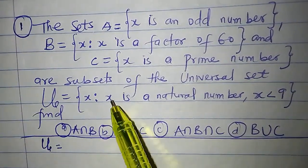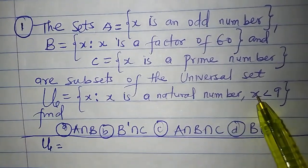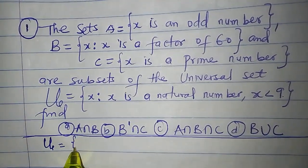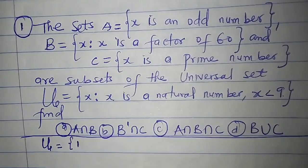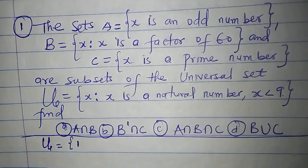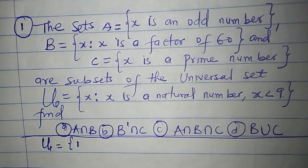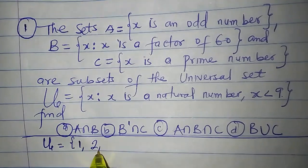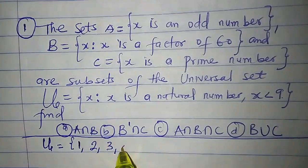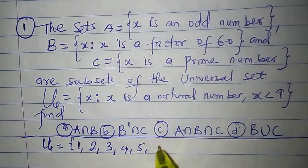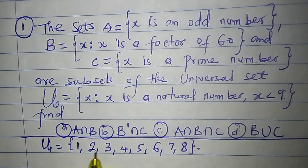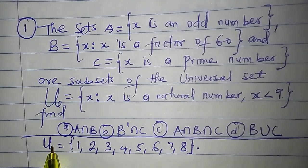For the universal set, X is a natural number and X is less than 9. Natural numbers less than 9 are from 1 to 8, since it is less than 9. Take note: natural numbers are counting numbers, and counting numbers start from 1. So we have 1, 2, 3, 4, 5, 6, 7, and 8. These are the elements in the universal set.